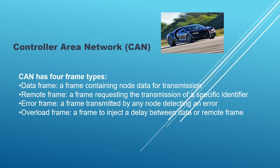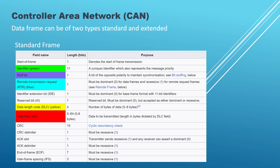The data frame is the only frame which contains the actual data. Data frames can be of two types: standard and extended. The CAN standard frame format is used for transmitting messages between nodes in a CAN network.